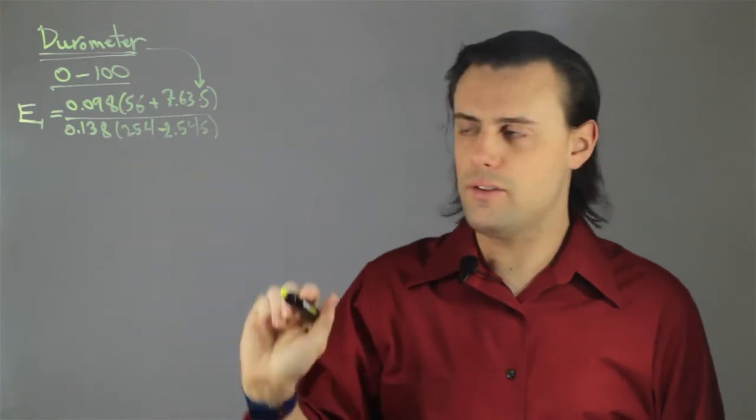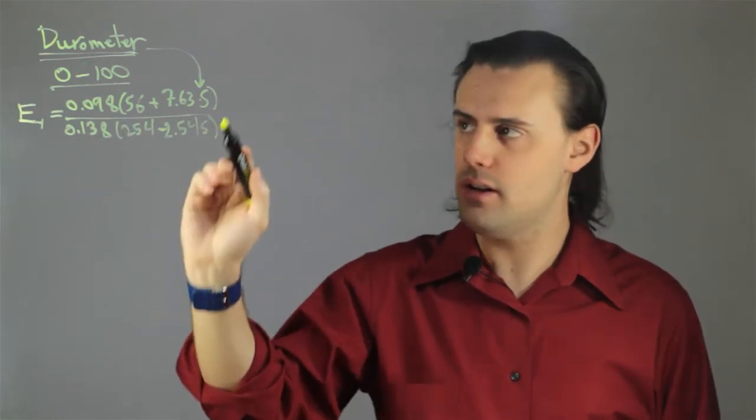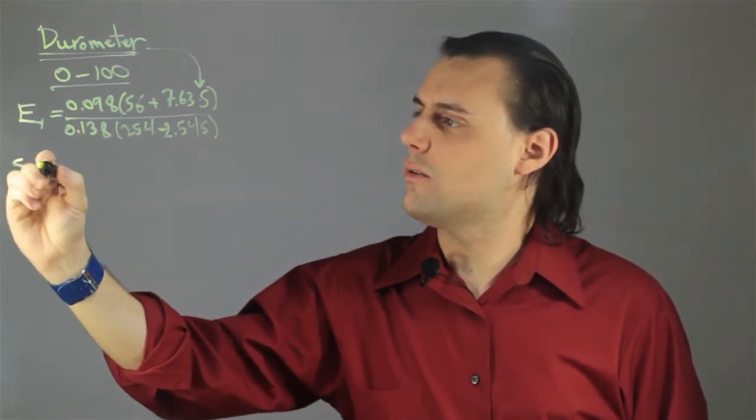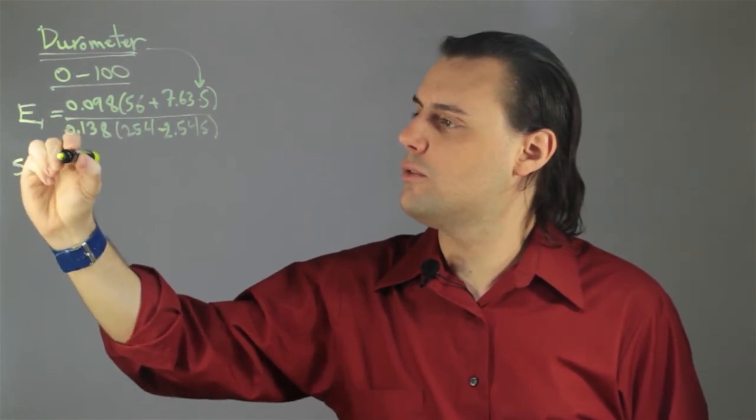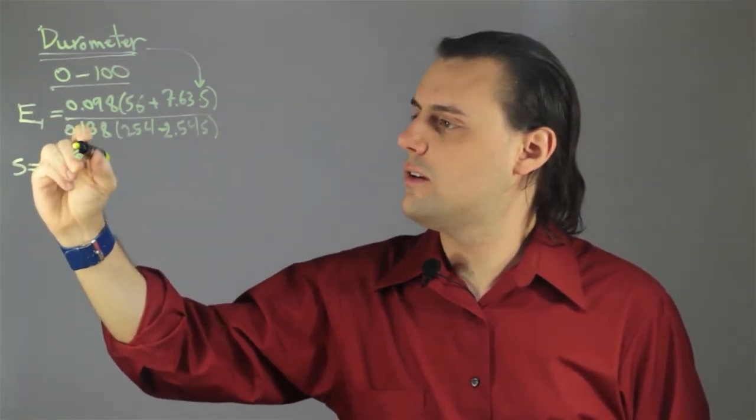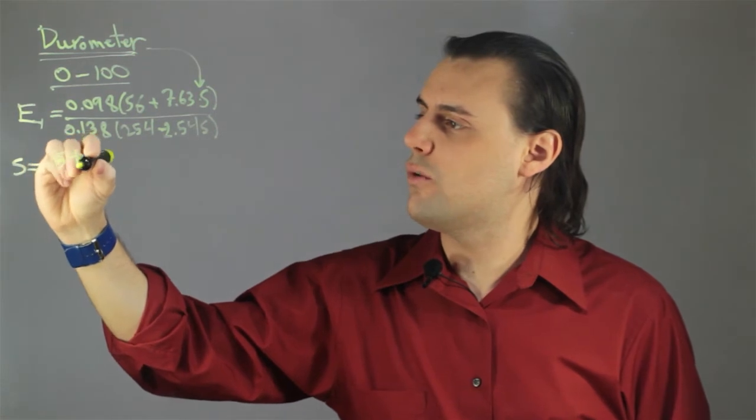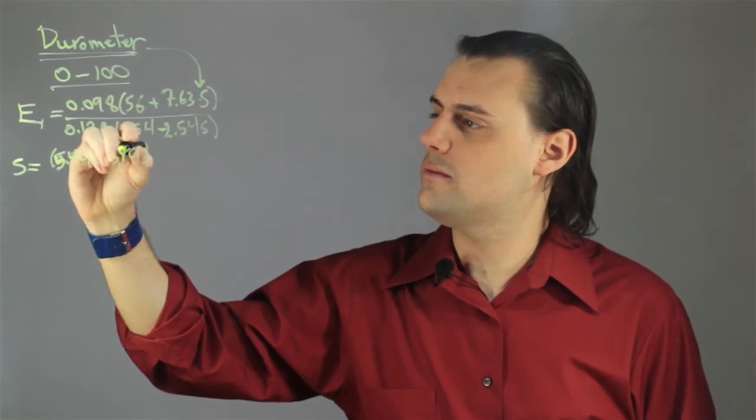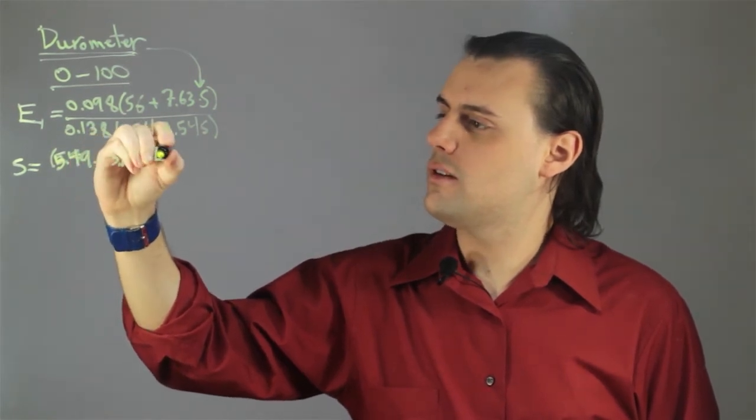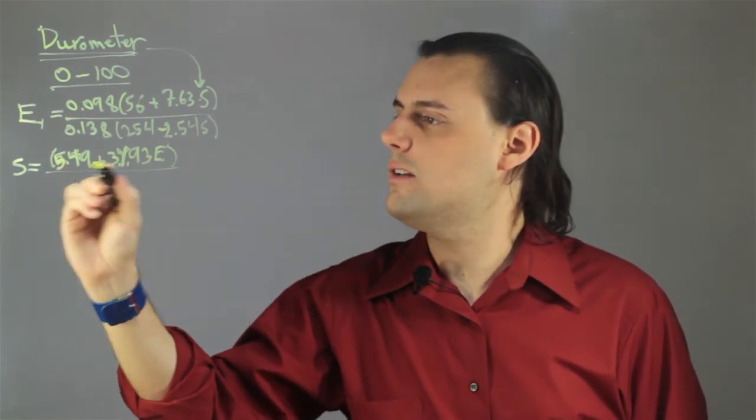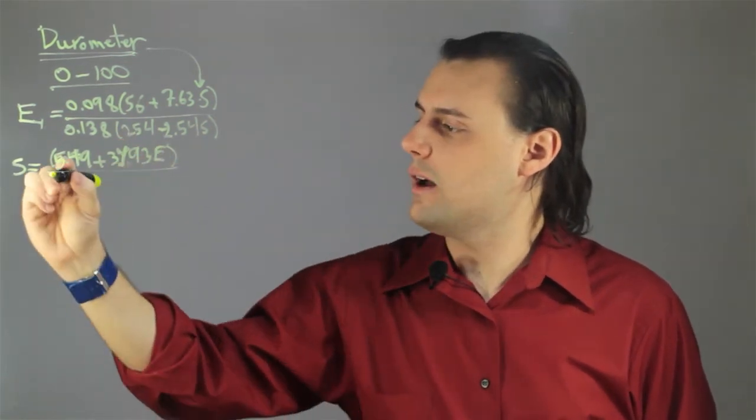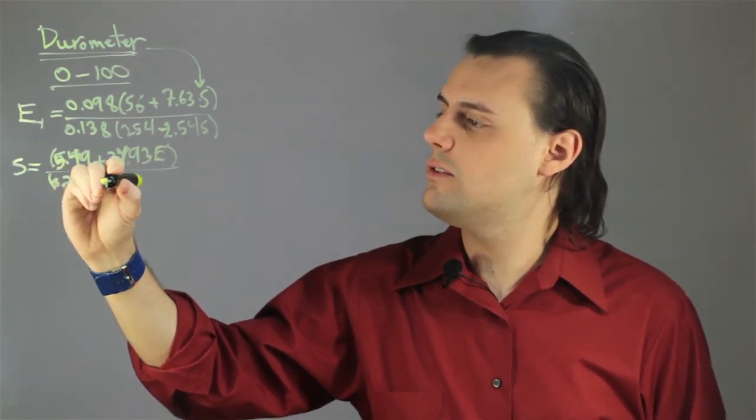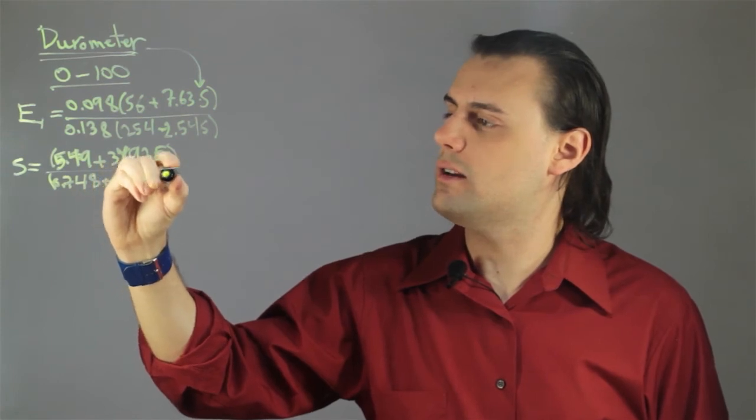If we invert this equation, then we can come up with an expression for the durometer in terms of Young's modulus. And so we end up with S is equal to 5.49 plus 34.93 times the Young's modulus, E, divided by 0.748 plus 0.349 E.